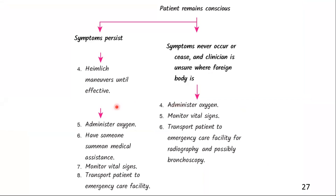If symptoms are absent or resolved but the clinician is unsure if the foreign body was aspirated, administer supplemental oxygen and continuously monitor the patient's vital signs. Transport the patient to an emergency care facility for chest and abdominal radiographs to rule out asymptomatic aspiration. Bronchoscopy may be necessary to locate and remove the foreign body.